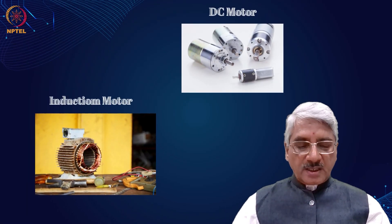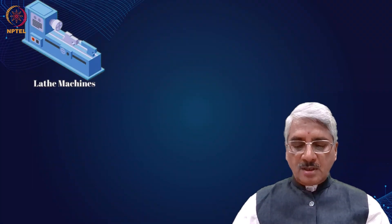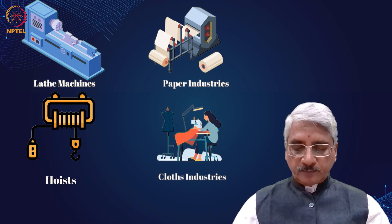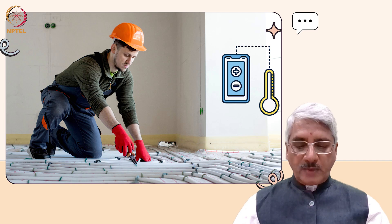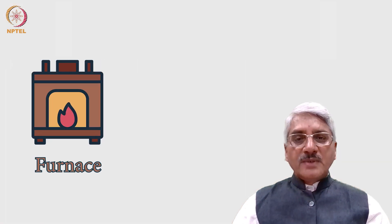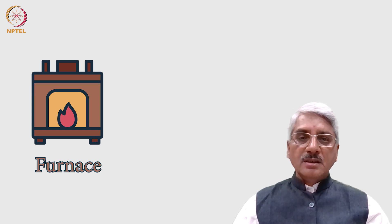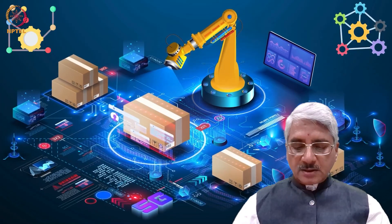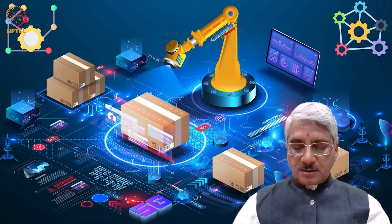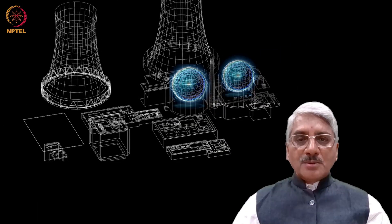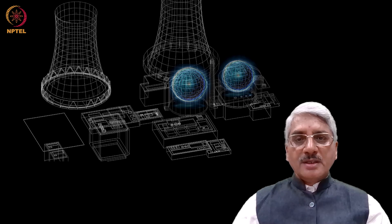DC motor and induction motor speed control in a variety of applications such as lathe machines, paper or cloth industries, wires, etc. Temperature control, for example, in room heating systems, furnaces, or simply in an electric iron. Of course, in some complex systems we also come across control systems — for example, total power output control in a nuclear reactor.